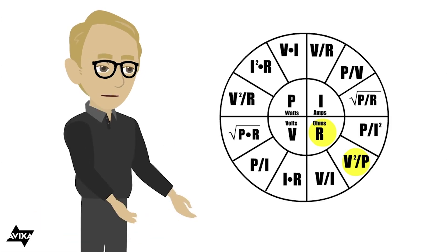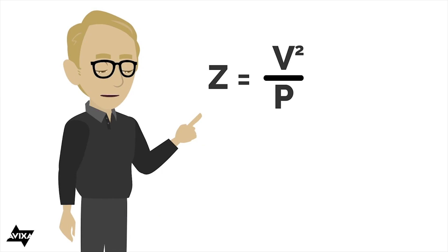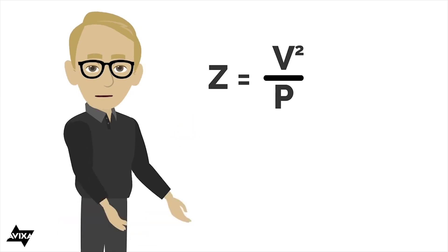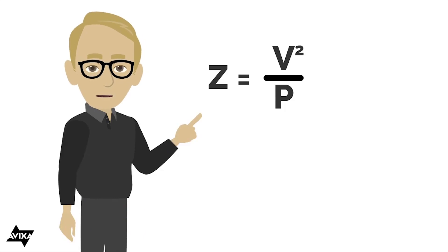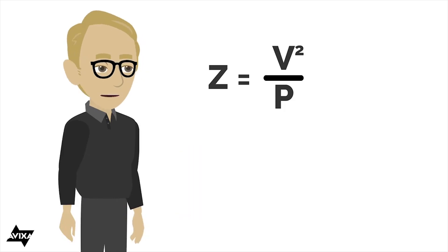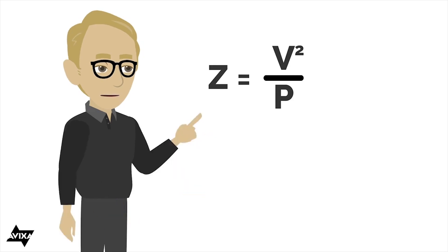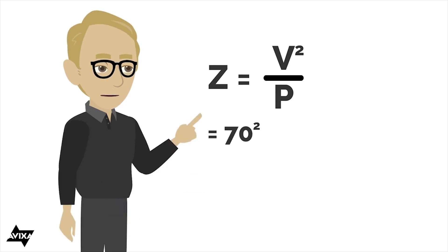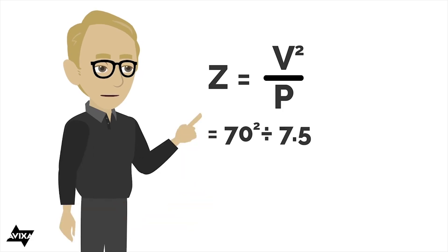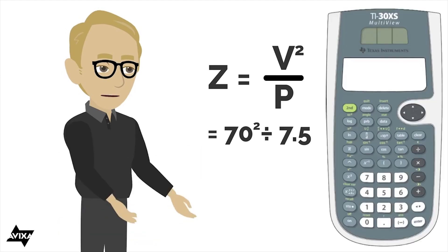So let's write that out. Z equals voltage squared over power. And we'll use this in a distributed or constant voltage system. So let's say we're doing this with a 70 volt system. So that's where we're going to get our voltage. 70 squared. If I were doing a 100 volt system, this would be 100 squared. And let's say I'm tapping a loudspeaker at 7.5 watts. So that's going to give us our power. So 7.5 watts. So 70 squared divided by 7.5. And this would be for an individual loudspeaker. So 70, and I can hit the square key, divided by 7.5.